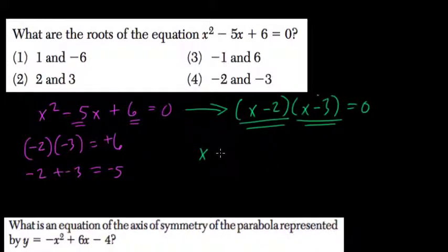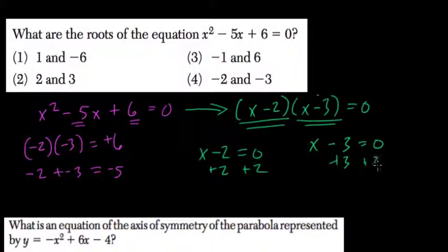And to solve it, we set both equal to 0. So x minus 2 equals 0, x minus 3 equals 0. Add 2 to both sides here, add 3 to both sides here. So x equals 3, and x equals 2.